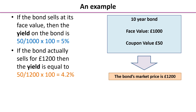Now let's say the bond actually sells for £1,200. Then the yield is equal to the coupon value divided by the market price times 100 — £50 divided by £1,200 times 100 — and that gives you a yield of 4.2%.